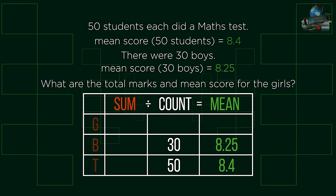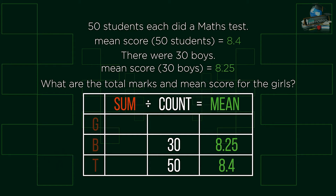If you want to have a go, pause now to try. The best way to tackle this problem is to use the same table from the first question. This time, however, we won't be filling in the sum column, but we can fill the mean column, like so. At this stage we have no sum values or information for the girls, but we can work this out given the information in the table.